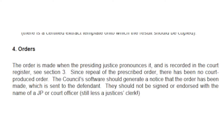The council software should generate a notice that the order has been made which is sent to the defendant. They should not be signed or endorsed with the name of a JP or court officer, still less a justice clerk. That's because the paperwork is not being issued by the court itself. A justice who signed it would be liable for it but it wouldn't be lawful. Furthermore, the summons in your paperwork in most cases has a legal seal from the Crown, which is another flaw. As we now know it's generated by the council, so how can it have the legal seal from the Crown when it's simply paperwork issued via council software? It's likely a template — they fill in names and send it off to you.